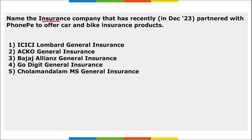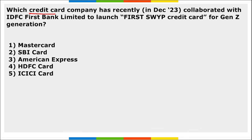Next: name the insurance company that recently partnered with PhonePe to offer car and bike insurance products. It is Eko General Insurance. They have recently partnered with PhonePe to offer car and bike insurance-related products.